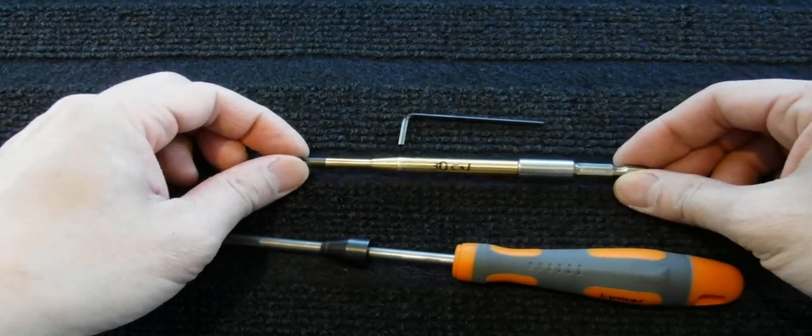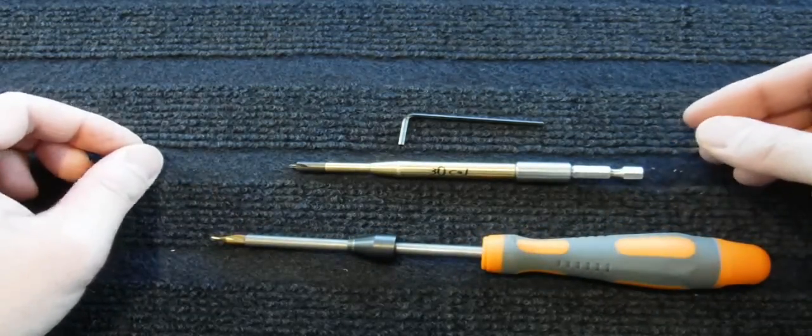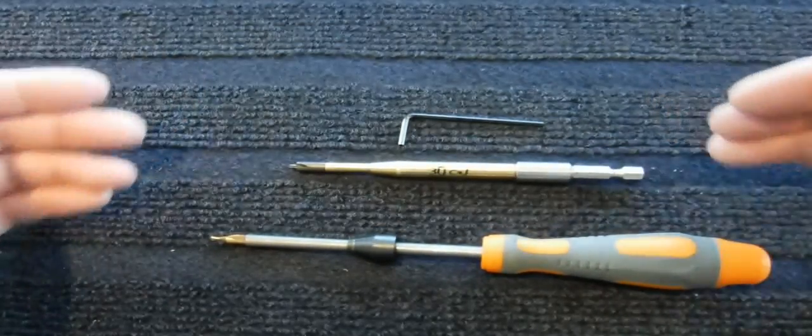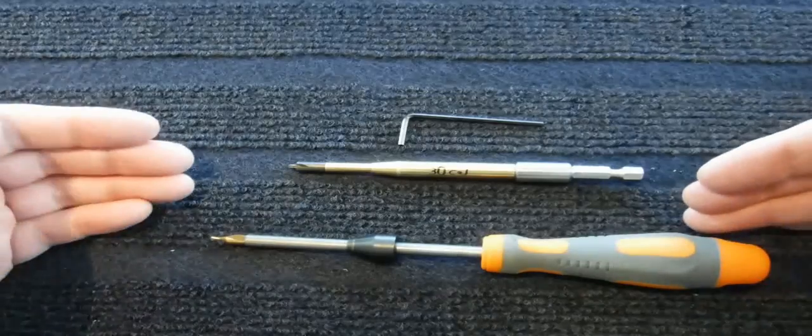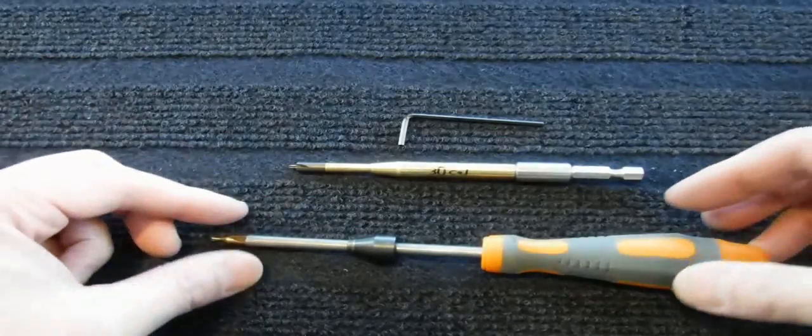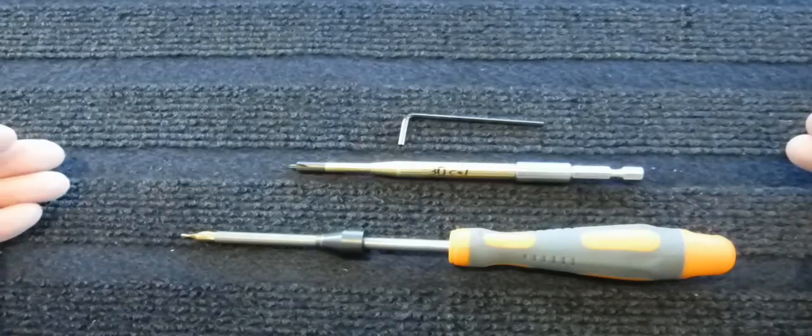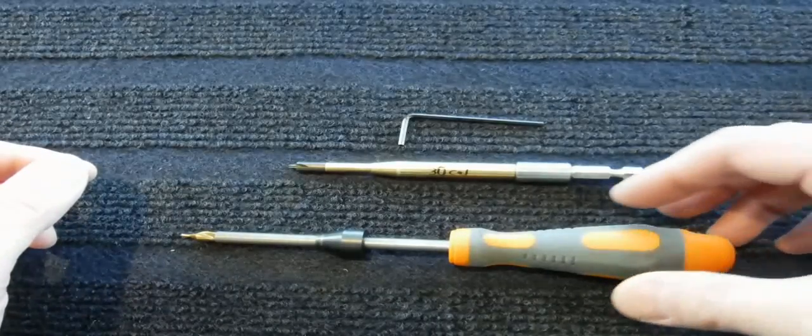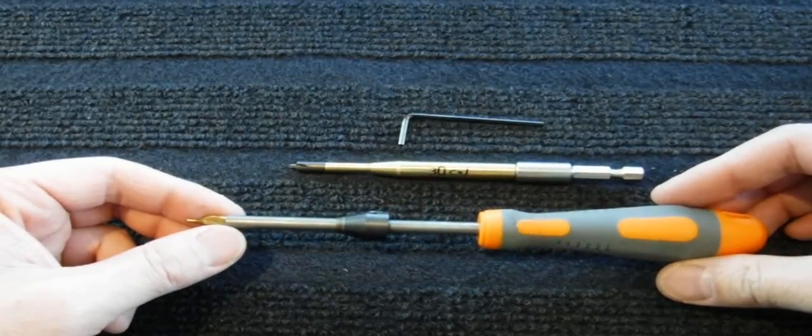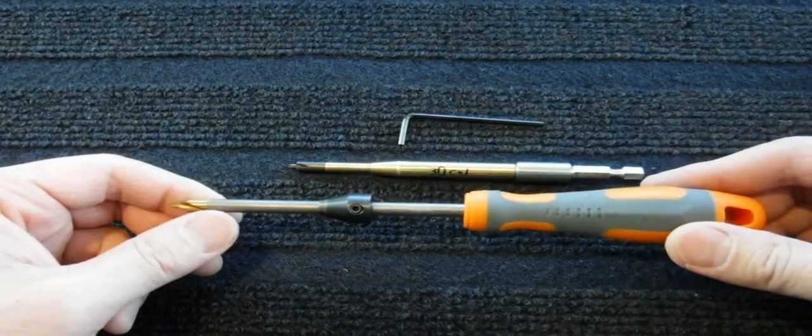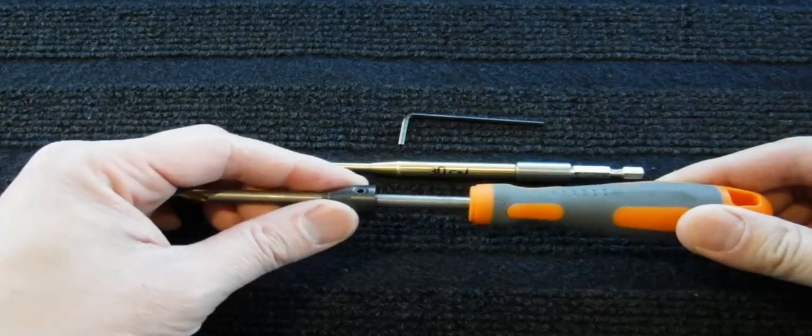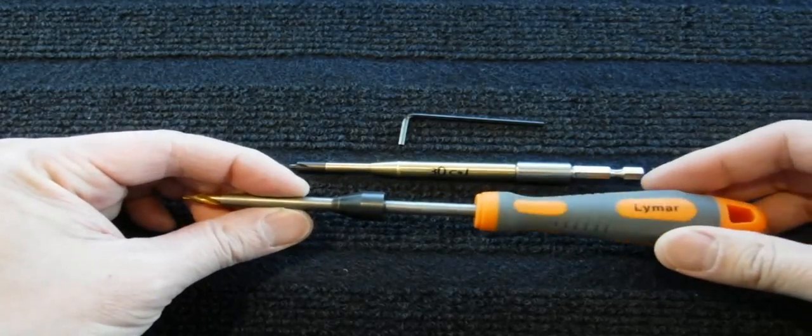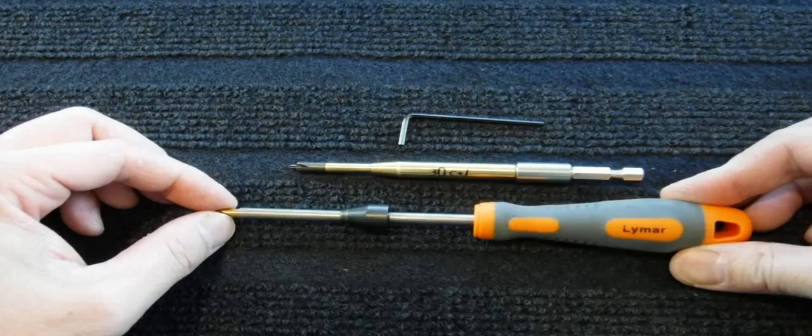What I wanted to do was change out my system of deburring flash holes and chamfering the flash holes because I have a lot of brass that needs processing. What I'm finding was I was beginning to question the depth stop with the Lyman flash hole deburring tool.